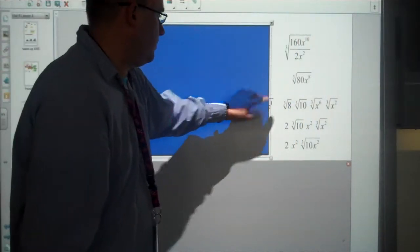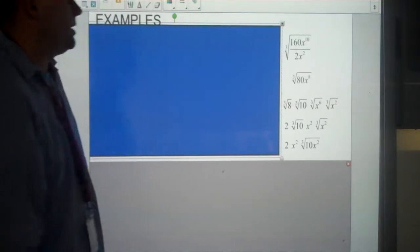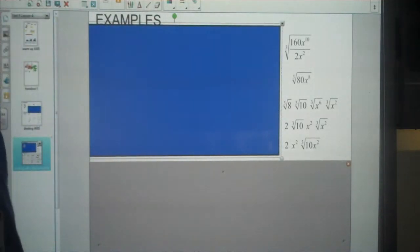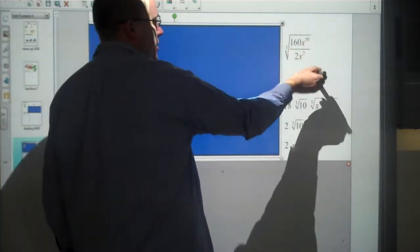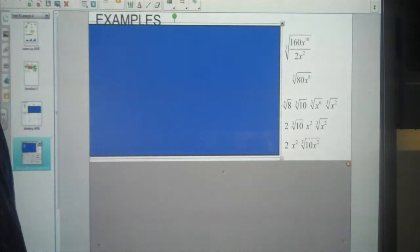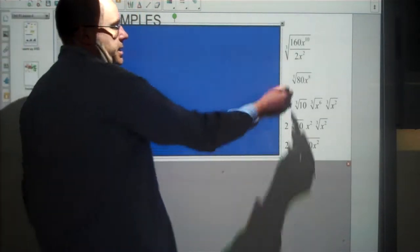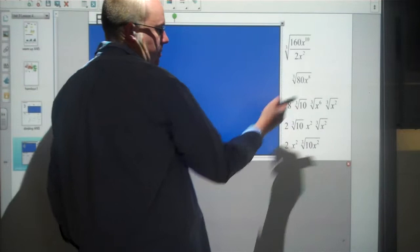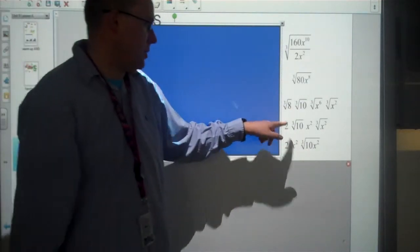Let's look at our last one. So 160 divided by 2 is 80. x to the 10 divided by x to the 2 is x to the 8, because we're subtracting the exponents here. 80 isn't a perfect cube, so I can split it up as 8 times 10, because the cube root of 8 is 2.